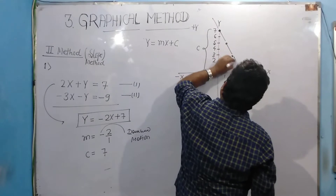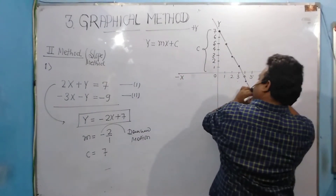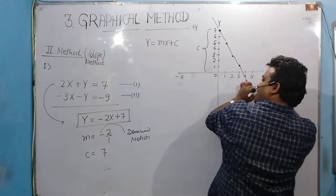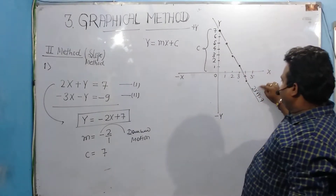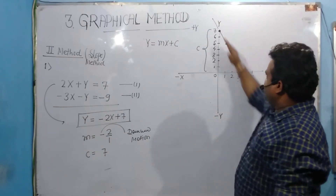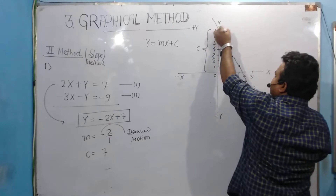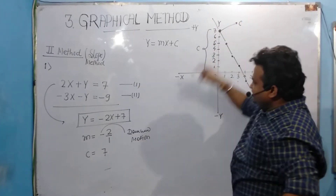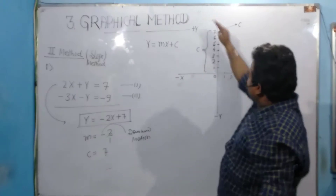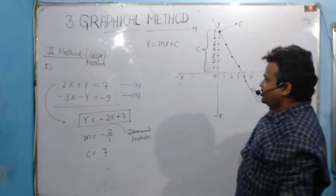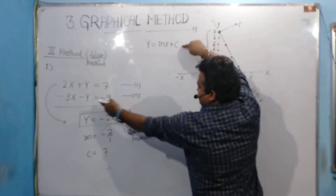Drawing this straight line, it represents the equation 2x + y = 7. This straight line passes through these points. The point where the line crosses the y-axis is my c value — the y-intercept where the straight line must pass. Now I convert the second equation into y = mx + c form.